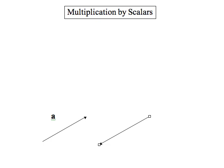So the operation of multiplying by a scalar stretches the vector by whatever the number is. And if it's negative, it'll flip its direction 180 degrees. That's multiplication by scalars.